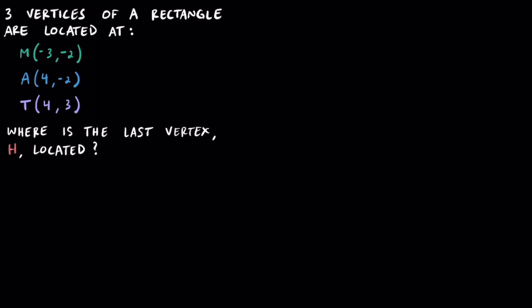Suppose we have three vertices of a rectangle located at the following coordinates below. Given these three ordered pairs for point M(-3,-1), point A(4,-2), and point T(4,3), we need to find the location or the ordered pair of the last vertex, point H, on the coordinate plane.